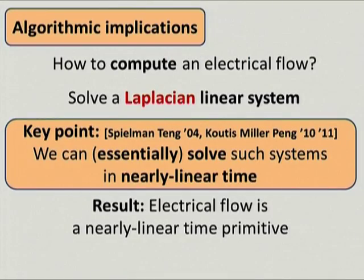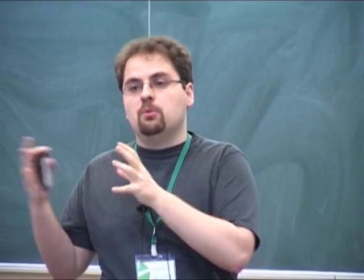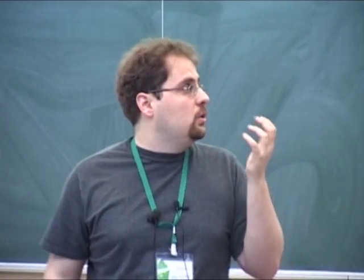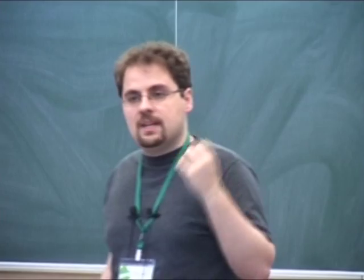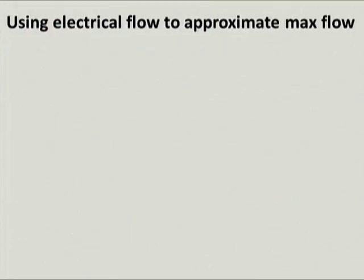The implication is that electrical flow is a near-linear time primitive—you can compute something as seemingly complex as an electrical flow in time not much bigger than running Dijkstra's algorithm. The natural question is: once you have this hammer, how can you use it to say something about the maximum flow problem?